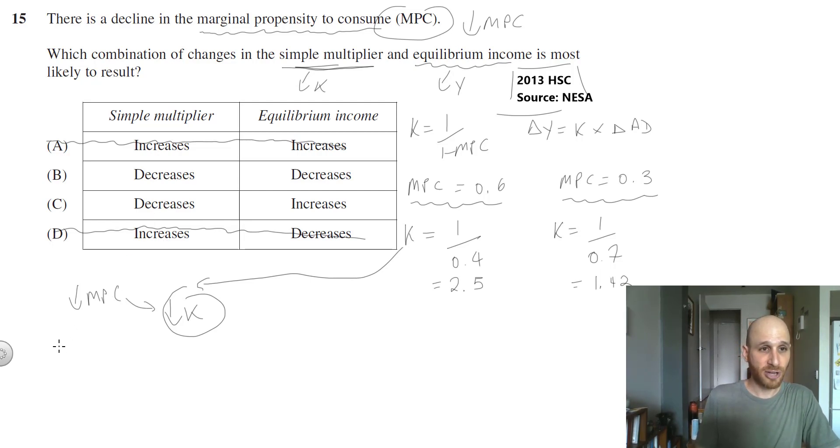If I've got a change in income will equal K times the change in AD, and if I see a decline in the multiplier, then there will be a lower number that is multiplying that change in aggregate demand. So the whole change in income will fall. Therefore the simple multiplier will decrease, and equilibrium income is also going to decrease, so our answer here is B.